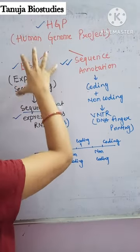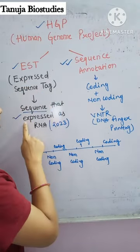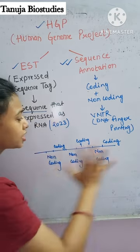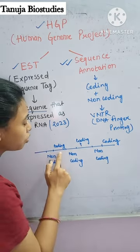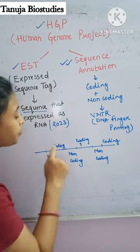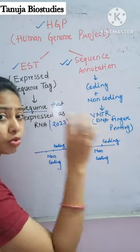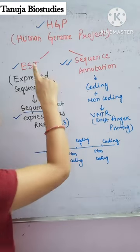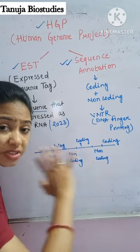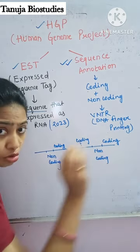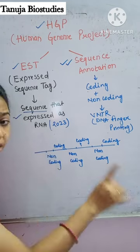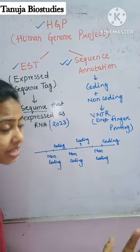What is the first method? It says: identify those sequences which are expressed as RNA. The whole DNA has two types of sequences — one is non-coding and one is coding. Non-coding doesn't code anything; it doesn't get expressed, and no protein or product comes from it. So EST focuses only on the coding part — only those sequences which are expressed as RNA will be identified, and the non-coding sequences will not be covered in the Human Genome Project.